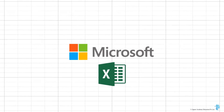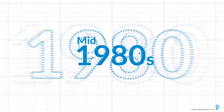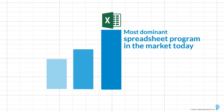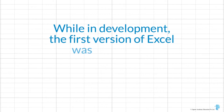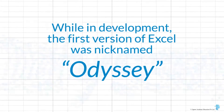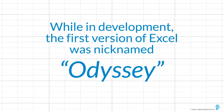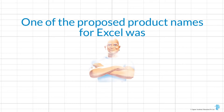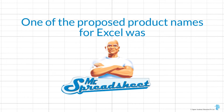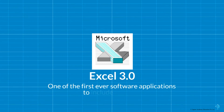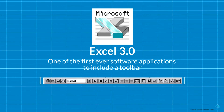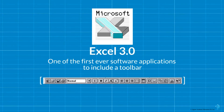The most recent development of course is our beloved Microsoft Excel. Written in the mid-1980s, it is still the most dominant spreadsheet program on the market today. Did you know that while in development, the first version of Excel was nicknamed Odyssey, but later, one of the proposed product names was actually Mr. Spreadsheet? I'm not entirely sure how that would have panned out — I'm happy it was called Excel. Excel 3.0 was also one of the first ever software applications to include a toolbar, something that we see on almost every software application today.